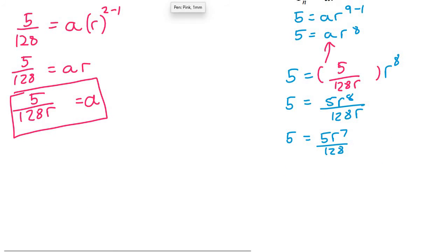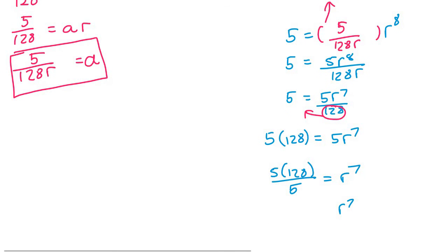Then I want to get R alone, so I'm going to multiply by 128, which gives us 5 multiplied by 128 equals 5R^7. I'm then going to divide by 5, so it's going to be 5 times 128 divided by 5 equals R^7, and so R^7 would be 128.